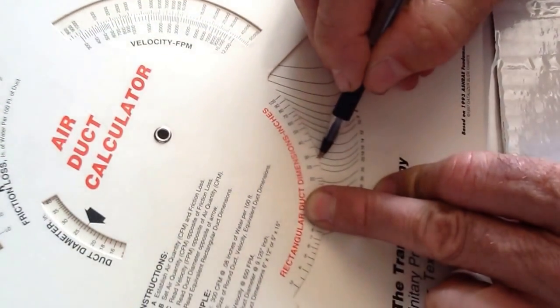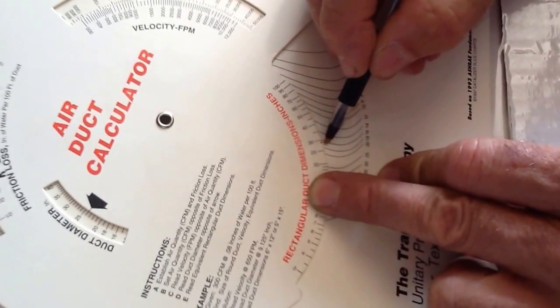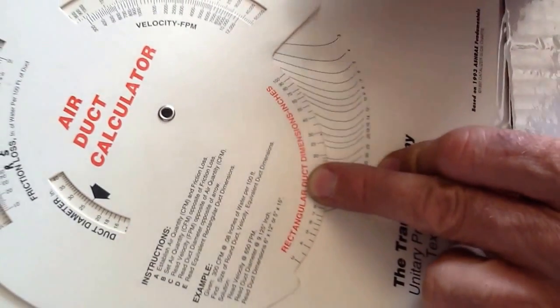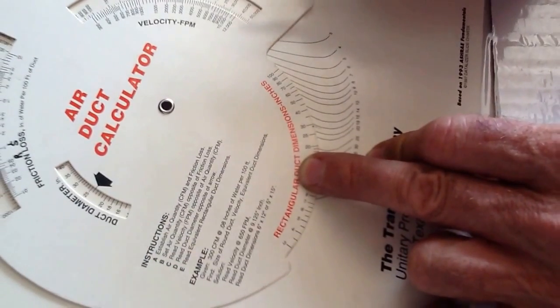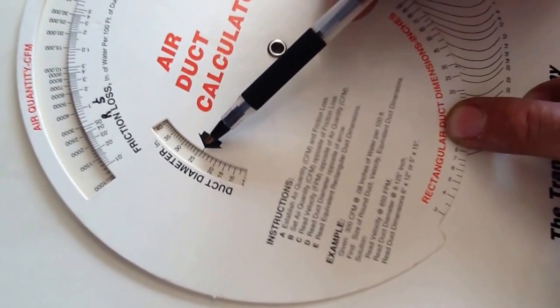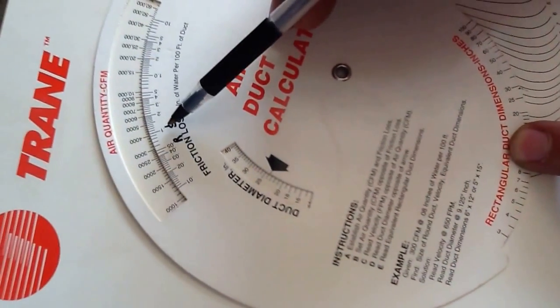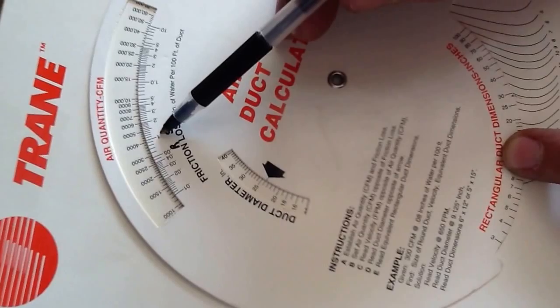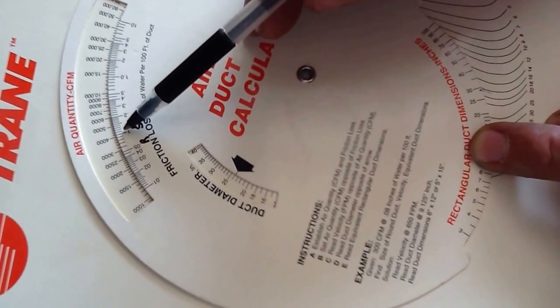So that's going to be like 29 by 17 right there. What size round duct do I need? I would have to have a 25 inch round duct. And that particular piece of duct work would supply 4,000 CFMs.